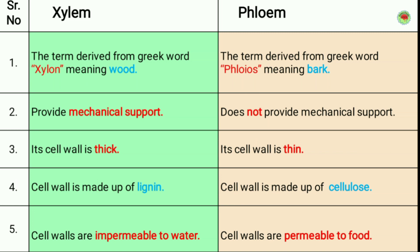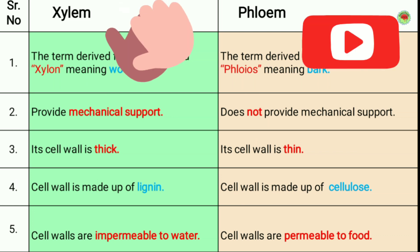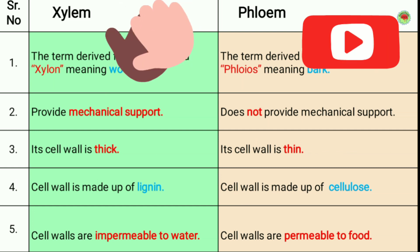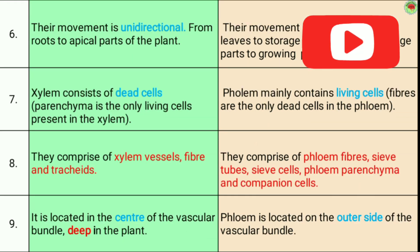Second, xylem provides mechanical support to the plant, while phloem does not provide any mechanical support. Third, the cell wall of xylem is thick, while in phloem the cell wall is thin. Fourth, the cell wall is made up of lignin in xylem, while in phloem it is made up of cellulose. Fifth, cell walls in xylem are impermeable to water, while in phloem cell walls are permeable to food.